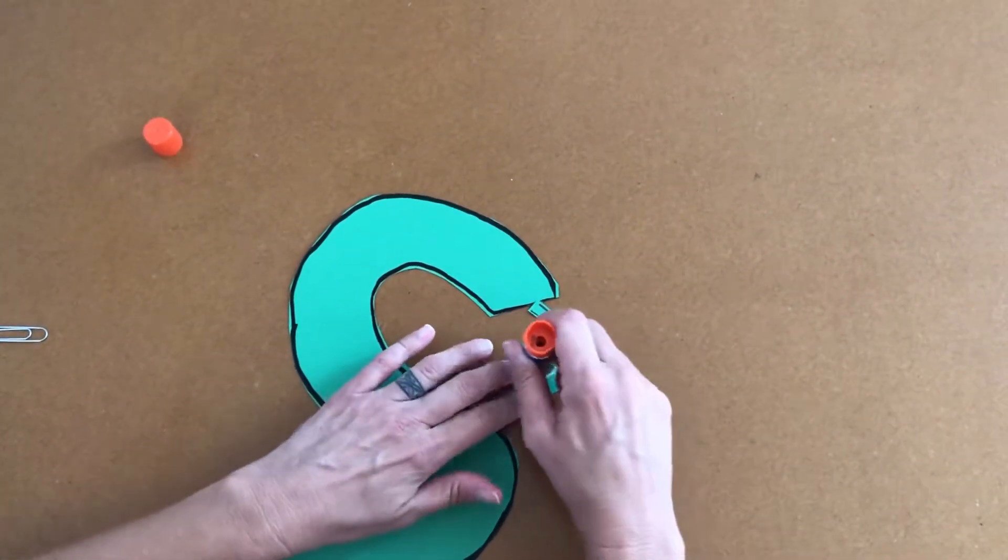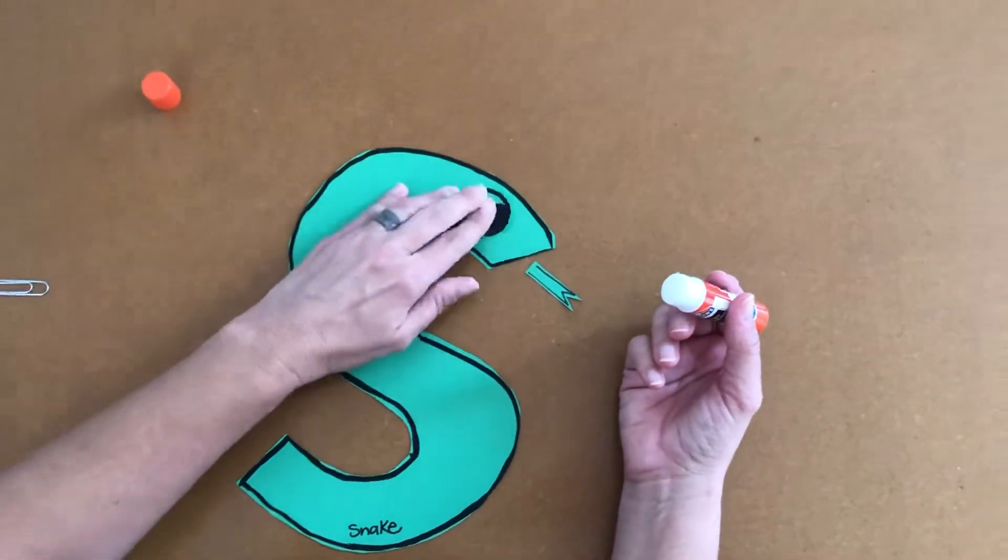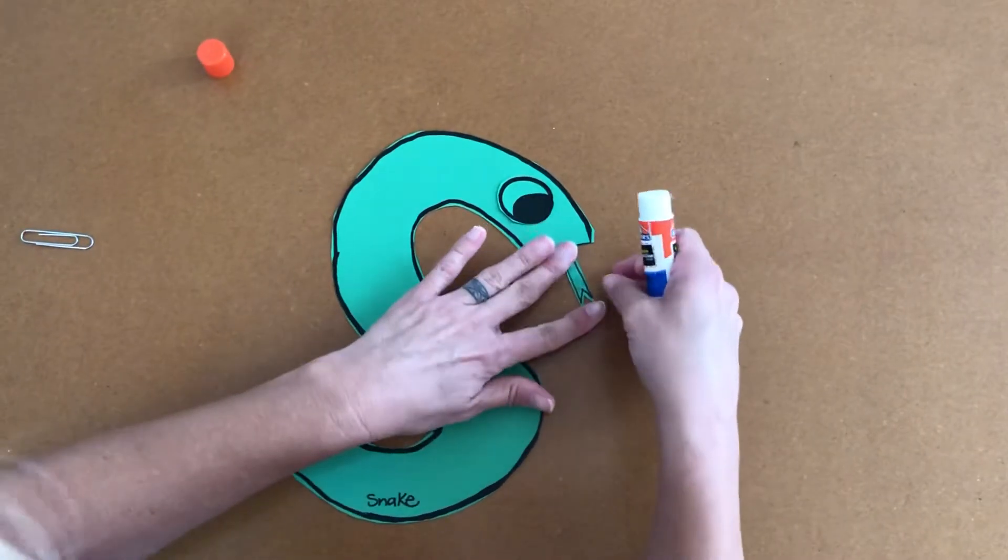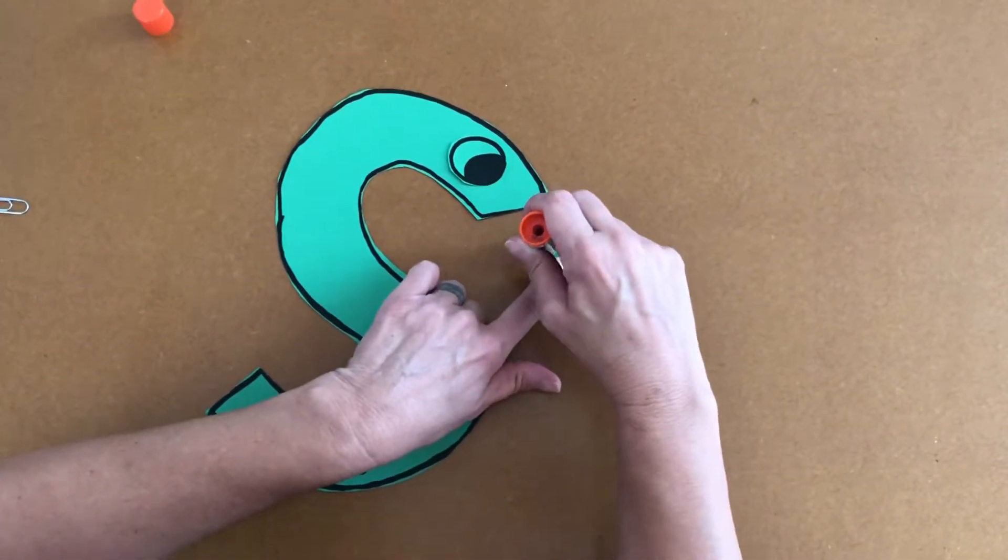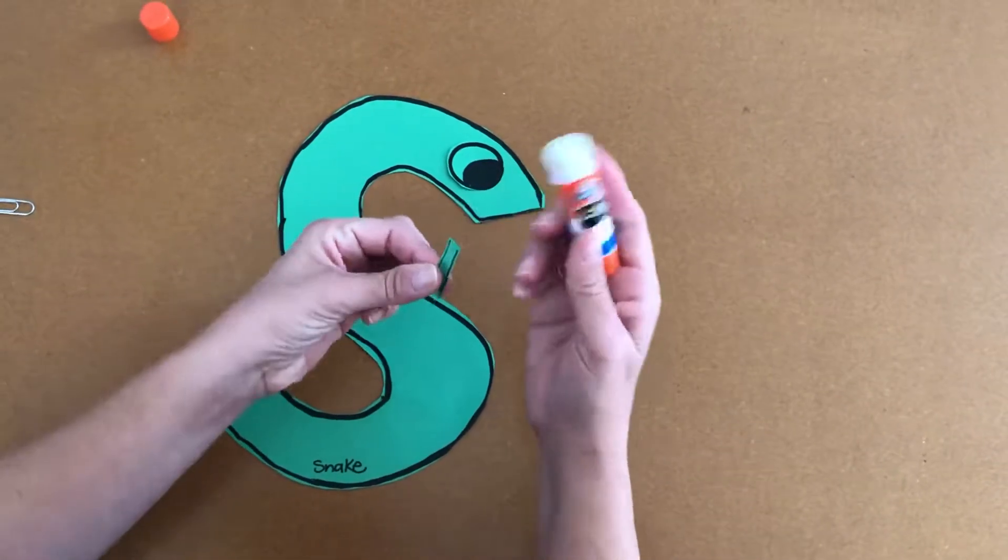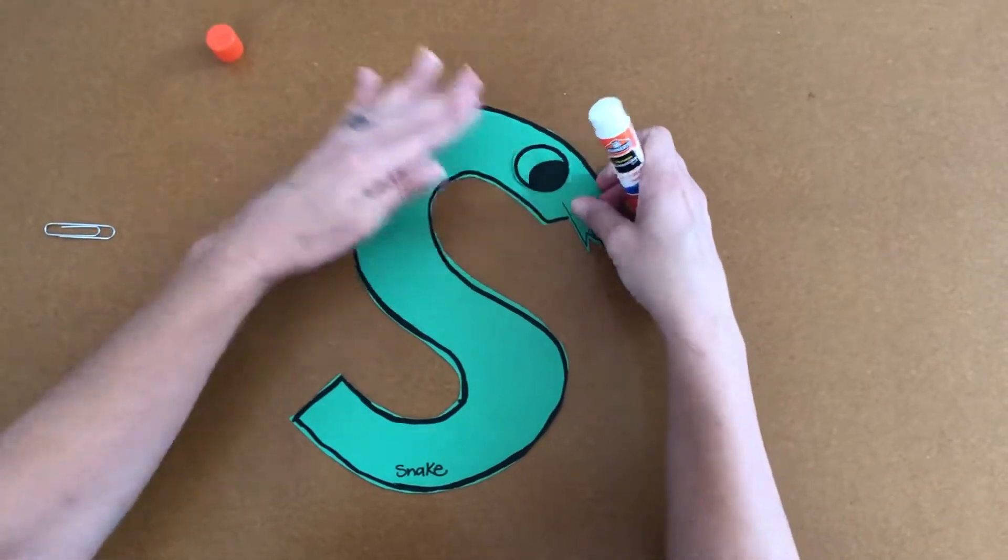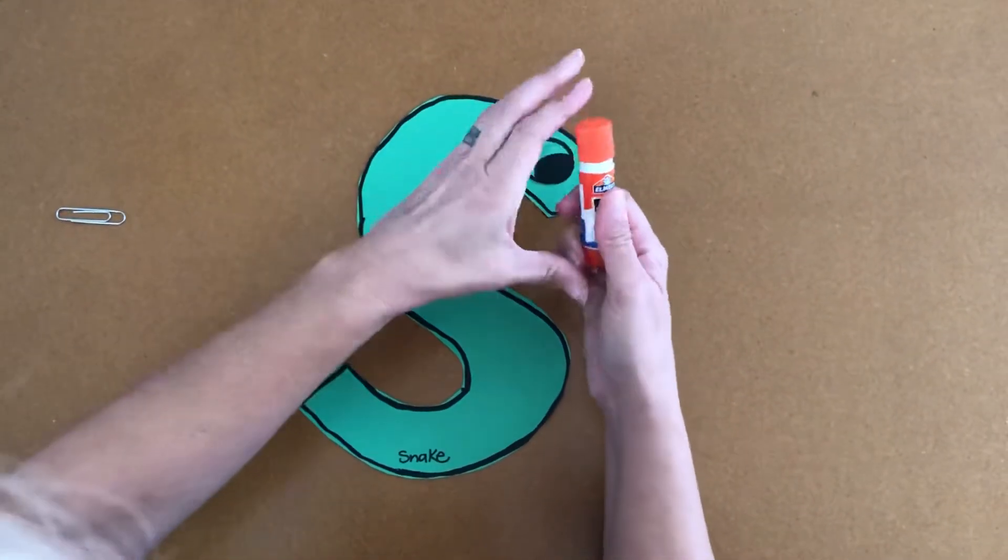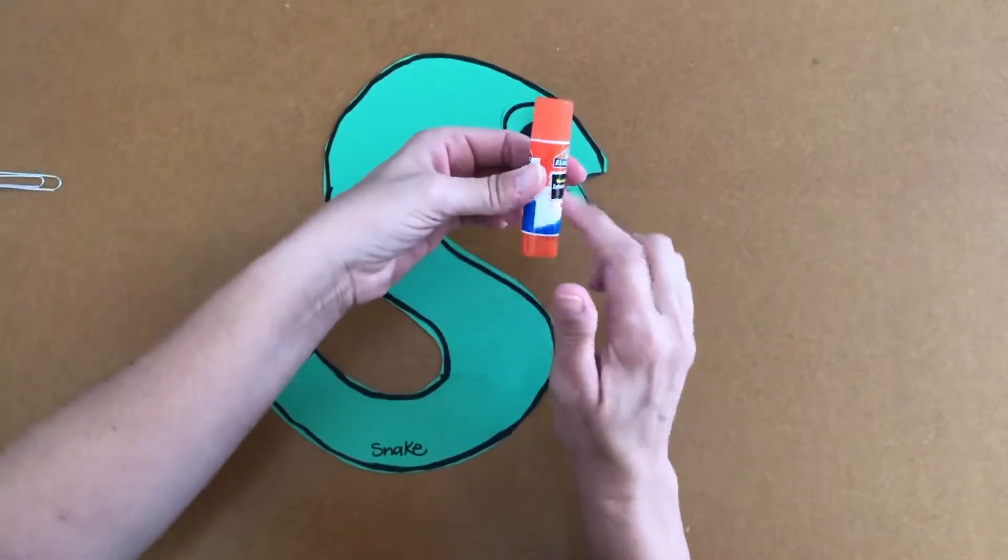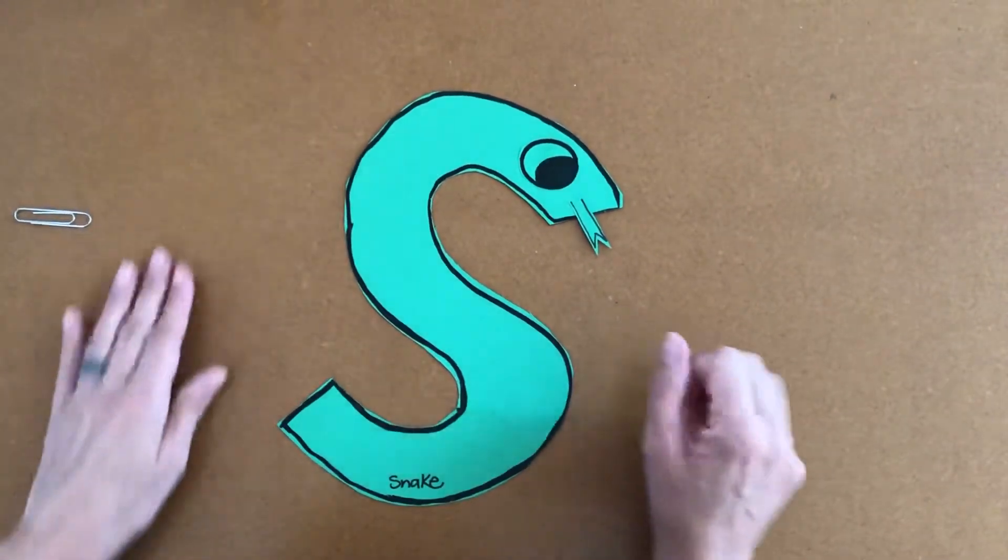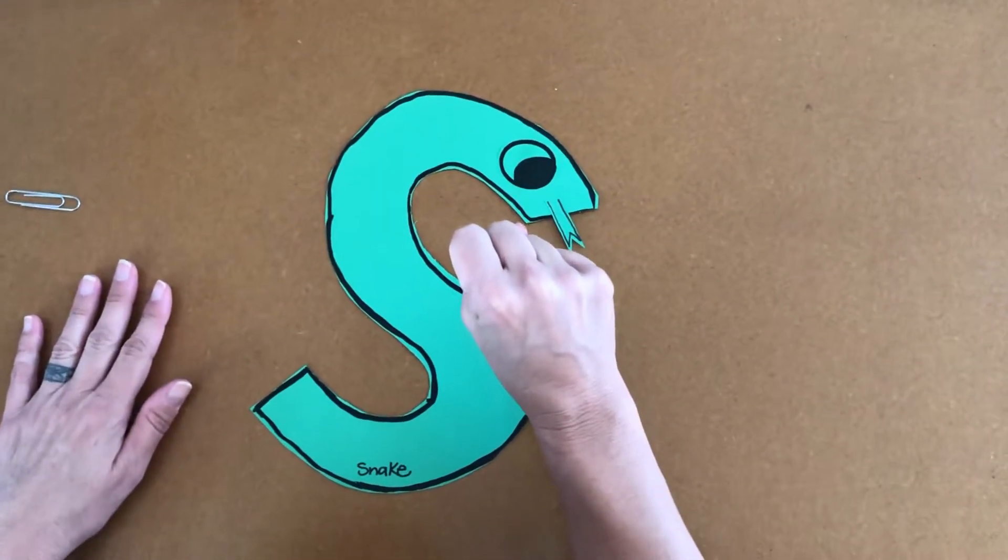You can put glue on the whole back of the eyeball because the whole eyeball is touching the letter S. And then on the back of this little snake tongue, we're just going to do a little dot is a lot. And then we'll stick it down. That was easy peasy. Make sure you always put your lid back on your glue stick. And then you're all done. Make the sign one more time. Snake.